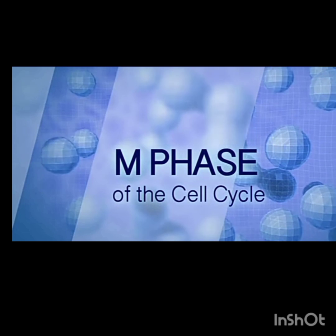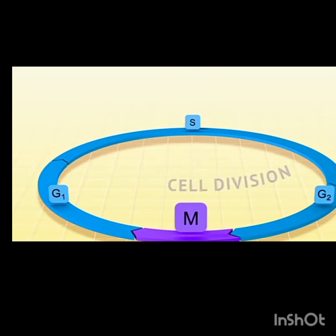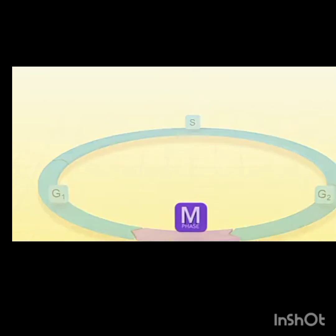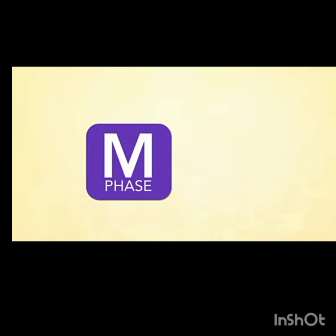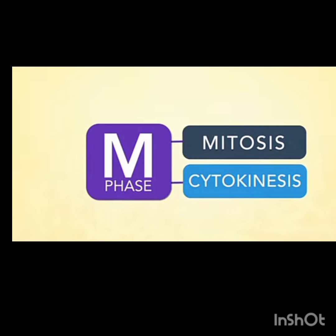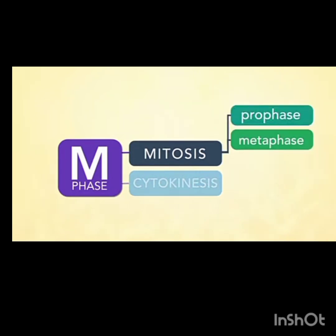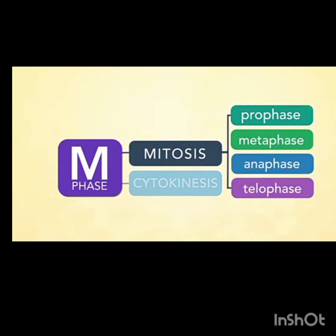Now let us see the main phase of the cell cycle: M phase. The cell cycle has G1, S, G2 — all together called interphase — and M phase, which is the cell division phase. M phase is divided into mitosis and cytokinesis, and mitosis is further divided into prophase, metaphase, anaphase, and telophase.